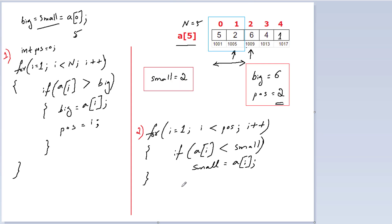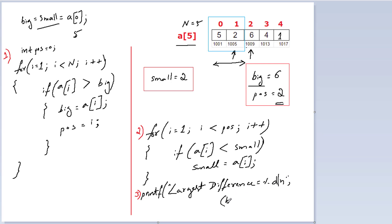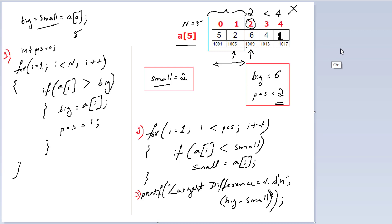Now let's write the third step, which is straightforward — printing the result. It's a printf statement: largest difference is %d, which is big minus small. Even though 1 is the smallest element of this array, it's present at index 4, which is greater than index 2 where the largest number appears. So this won't satisfy the problem statement condition and is discarded.